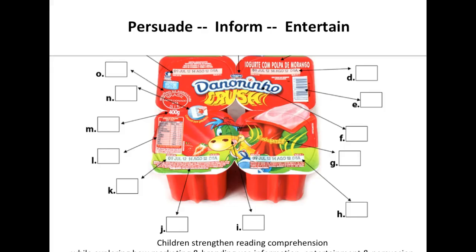We also looked at how introduction to media literacy can happen with very young children, even in kindergarten. Because all five- and six-year-olds should understand that media messages may be designed to persuade, to inform, and to entertain, and that often a blend of those purposes are embedded in any one message — for example, the yogurt container. Children can learn to recognize which elements contain information, which elements contain entertainment, and which elements contain persuasion, and how those are blurred in many aspects of consumer culture today.